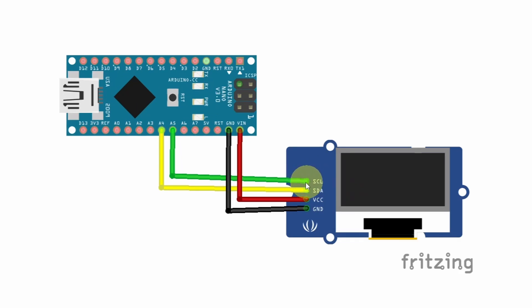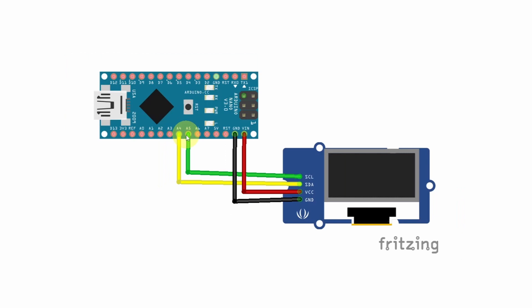We connected the SCL to the SCL of the board. For an Arduino, it is the analog pin A5. The SDA goes to the SDA, which is A4. These displays need a little bit of power, by connecting the VCC to the 5V pin. For an Arduino Nano, it is the VN pin, which outputs 5V. The GND goes to the GND.